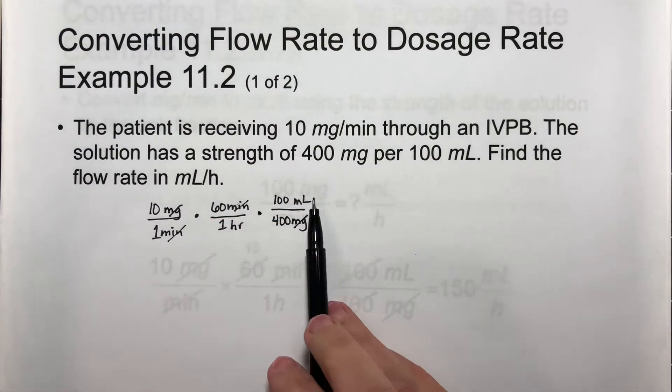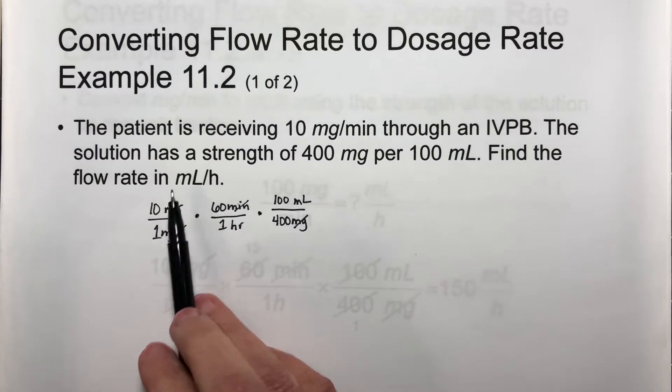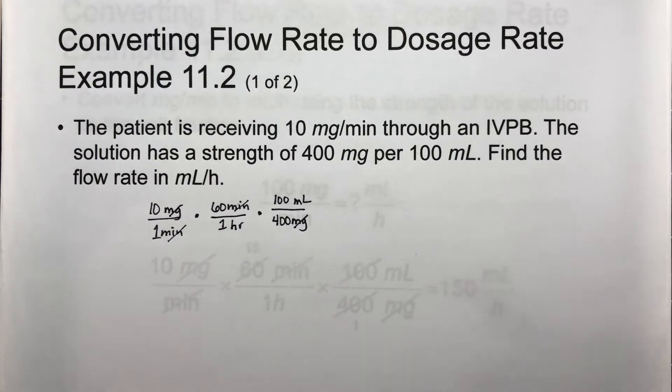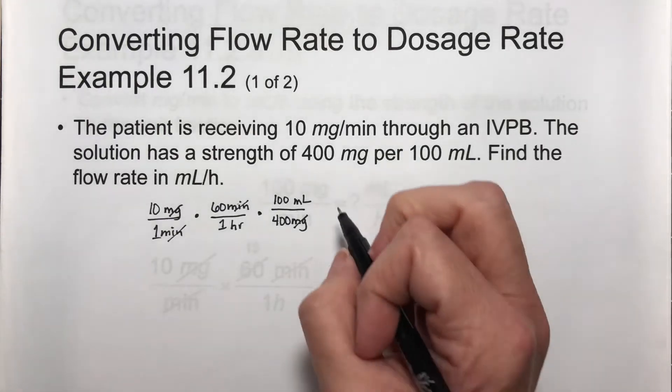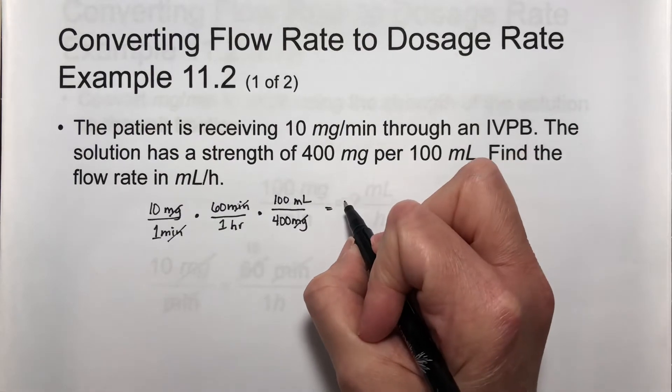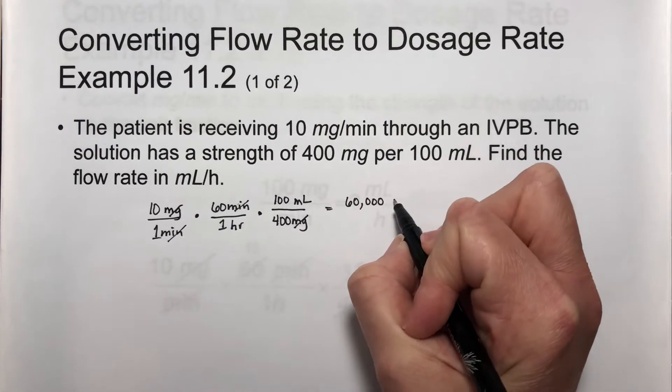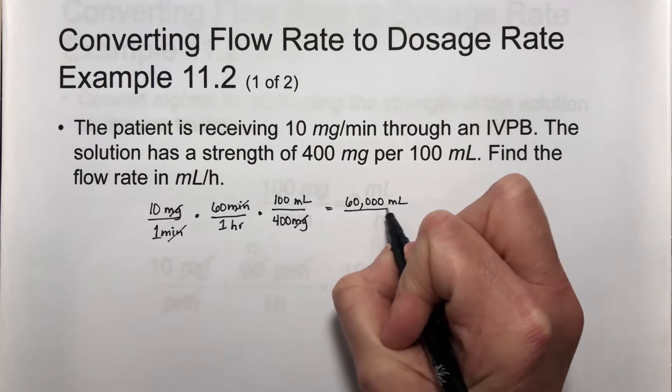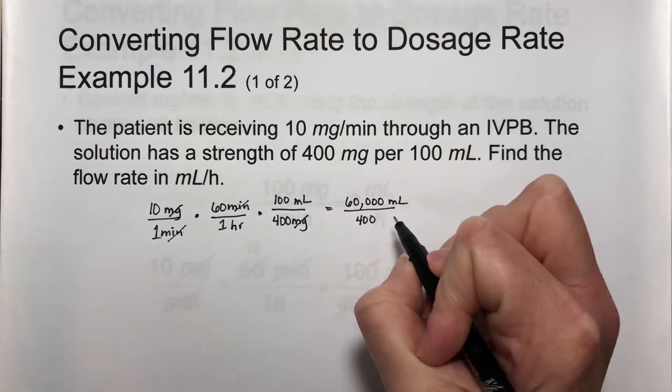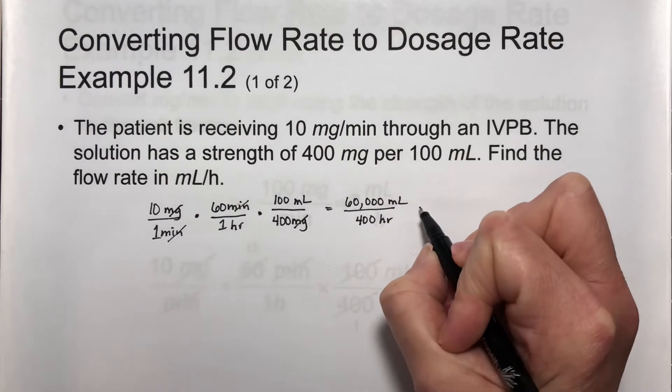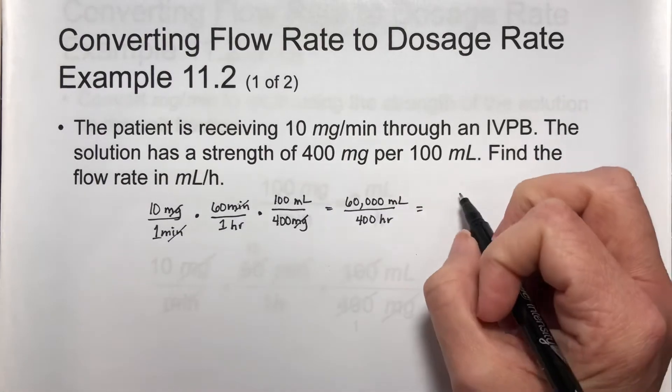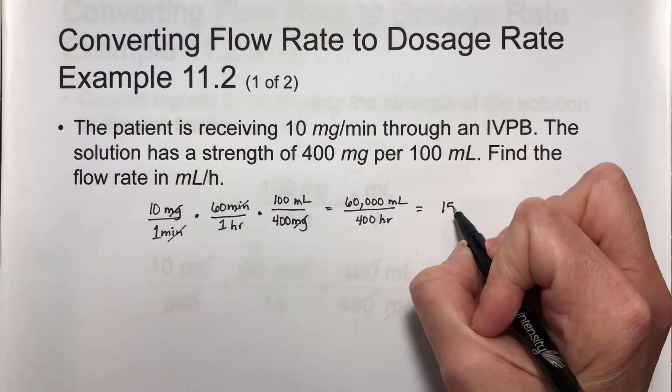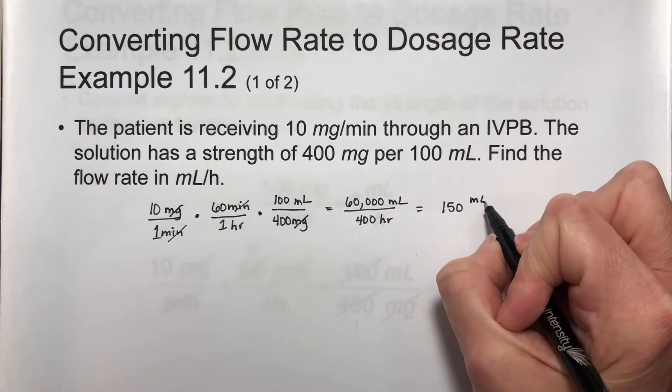Now we have milliliters over hours, which is what we want. So you can either do some cross cancellation or multiply straight across. If you multiply straight across, you get 60,000 milliliters over 400 hours. Then you do that division, and you should get 150 milliliters per hour.